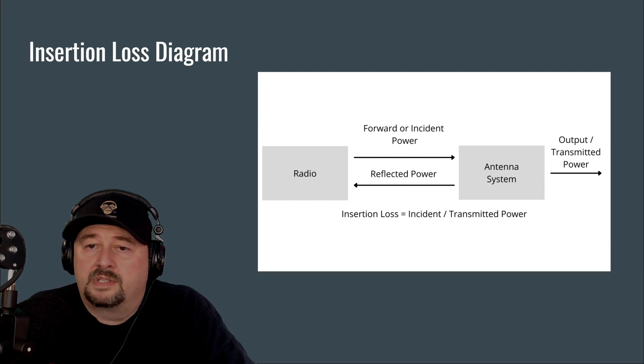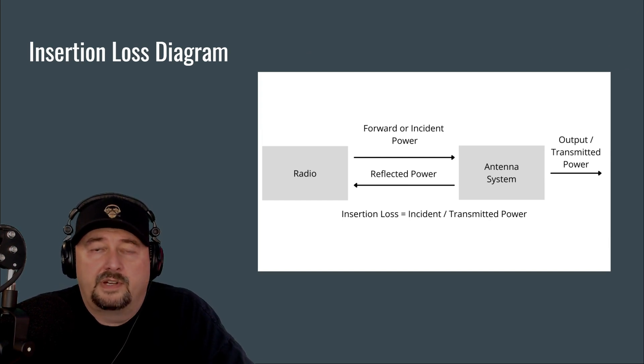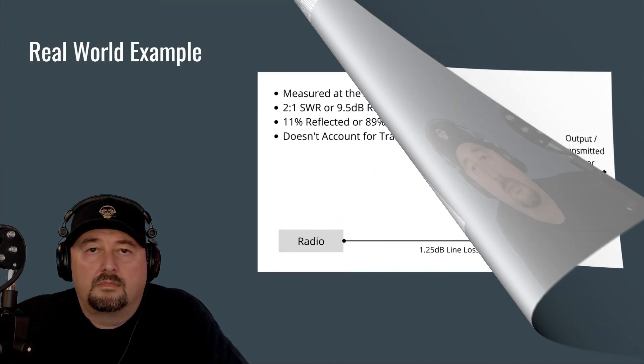So once again, I use my art skills to come up with a diagram. It's very similar to the first. You have your radio and your forward or your incident power going into your antenna system with your output power and your transmitted power. It also shows the reflected power coming back from the antenna system. Insertion loss equals the incident or forward power divided by your transmission power.